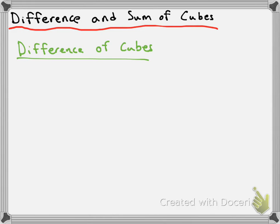Difference of cubes basically means that we have two cubic terms that are being subtracted from one another. So for example, a cubed minus b cubed.